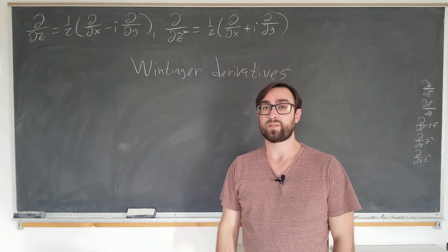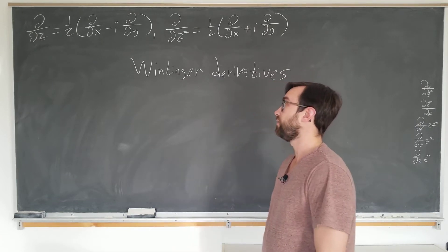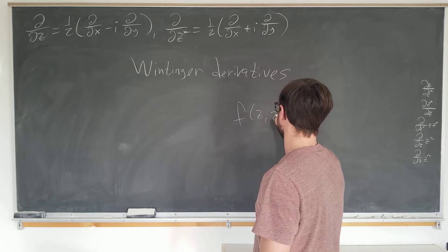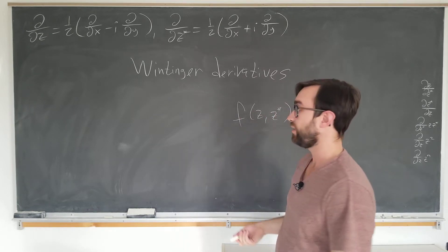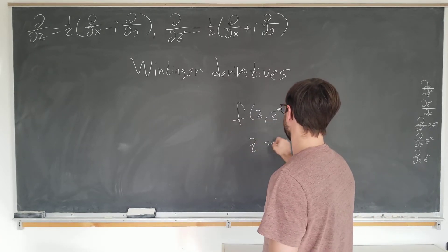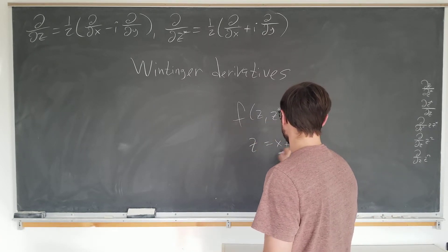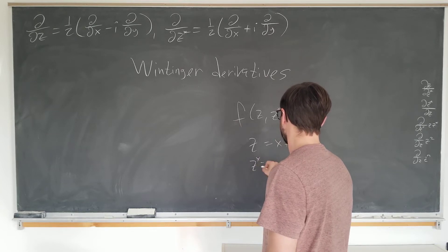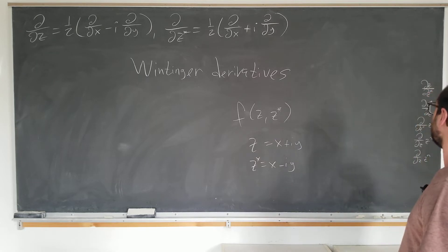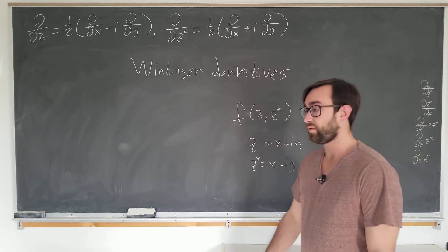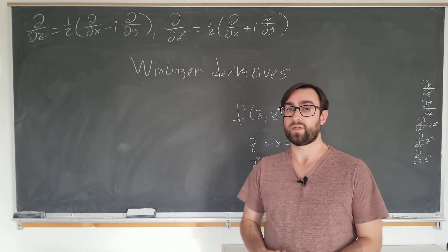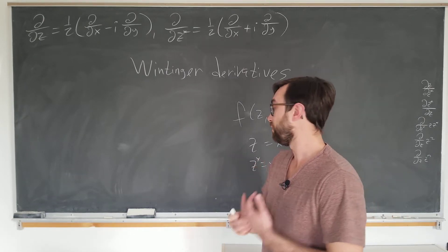We are going to verify today that these partial derivatives behave on a function f of z and z star the same way as an ordinary partial derivative would, if we write out z is x plus i y and z star is x minus i y respectively. We are going to start with a few simple cases. There's not going to be any kind of rigorous proof in this video, just a few special cases.